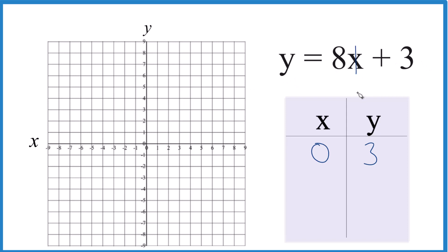I could put 1 in for x, but 8 times 1, that would be 8 plus 3. That would give me 11, and y only goes up to 9, so I'd rather not do that. Why don't we do negative 1? 8 times negative 1, so we're doing negative 1 for x. 8 times negative 1 is negative 8. Negative 8 plus 3, that is negative 5.